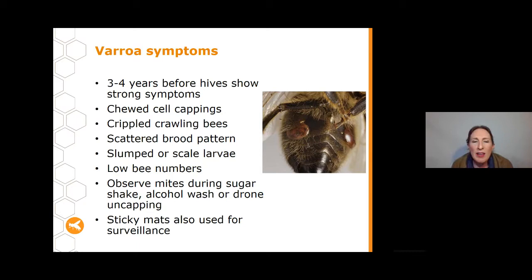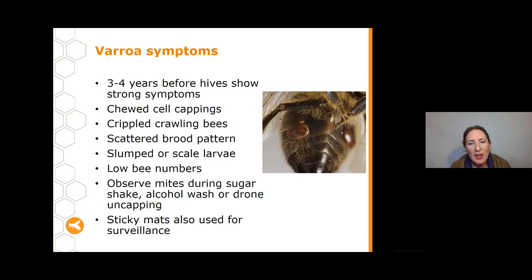Another key sign to look for is low bee numbers, but most of these symptoms won't appear until the mites have been present for quite a long time. So it's really important to do sampling regularly — either a sugar shake, alcohol wash, or drone uncapping — and I'll go through these in more detail shortly. We also use sticky mats for Varroa surveillance: these contain a miticide that kills the mite and they get stuck on the mat. We focus a lot on surveillance around ports where mite incursions could occur.